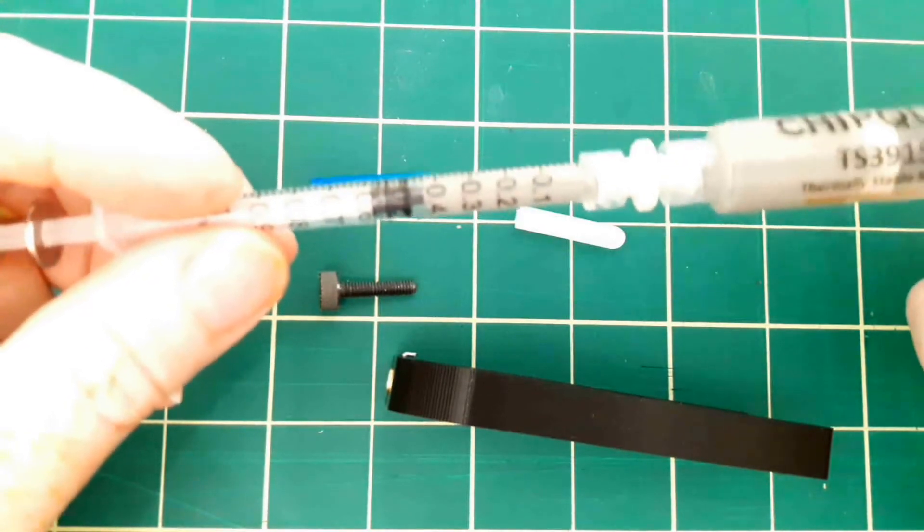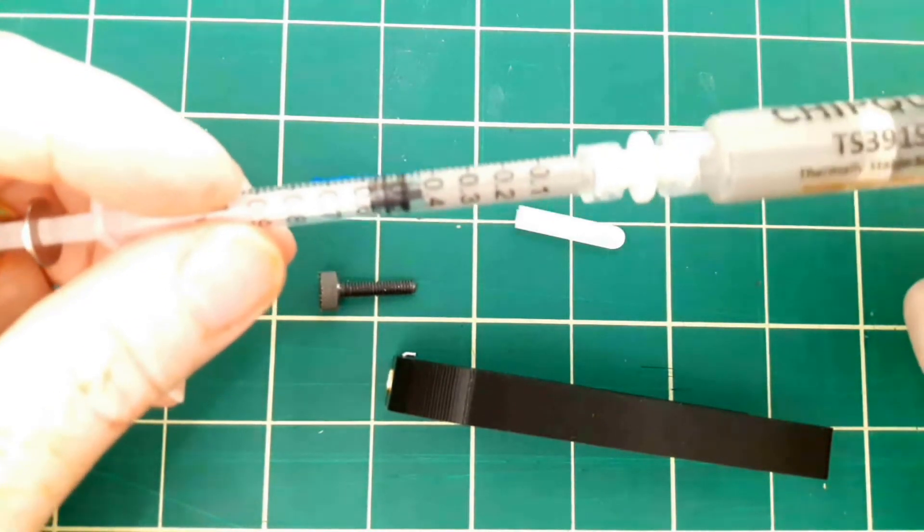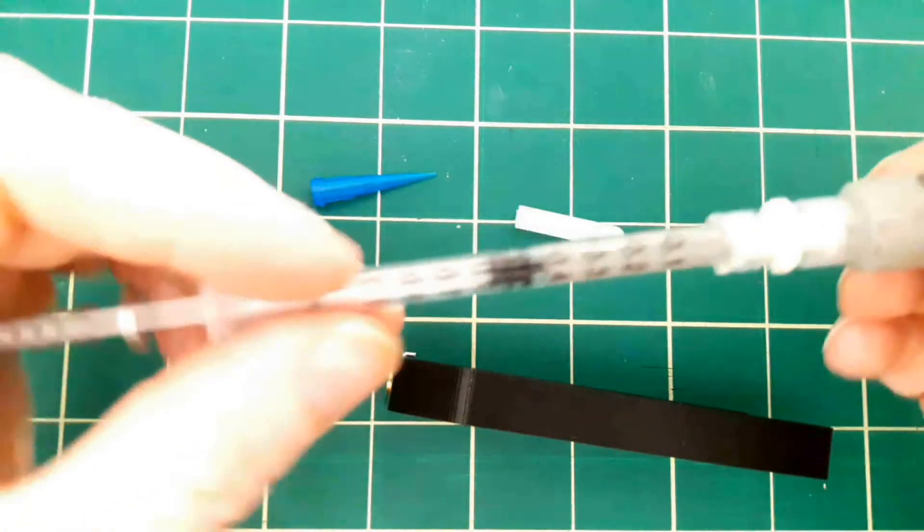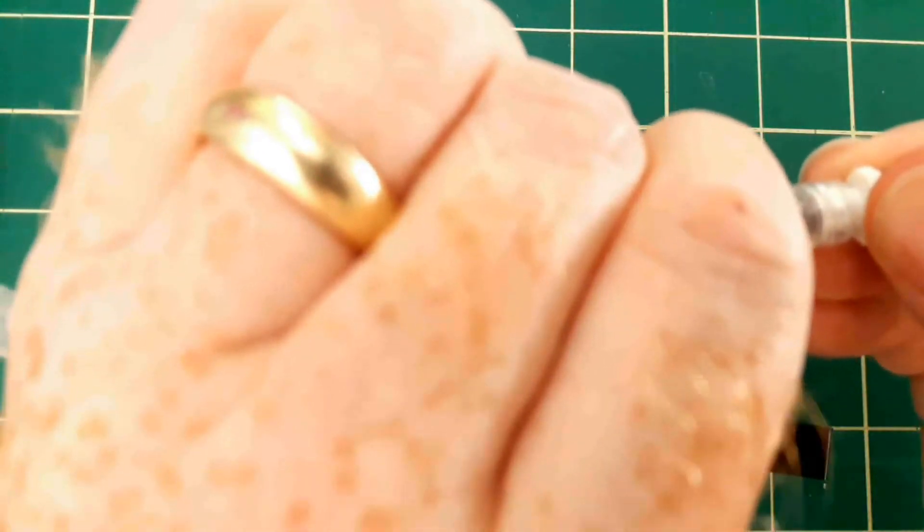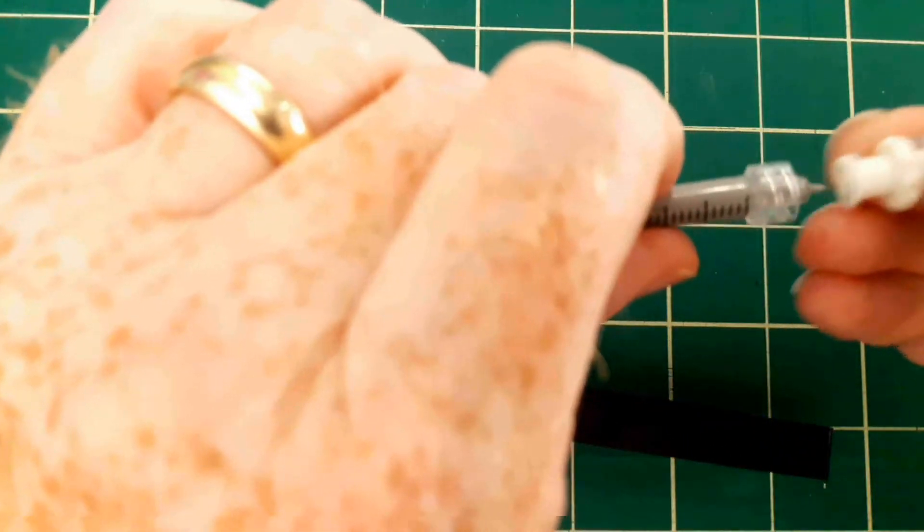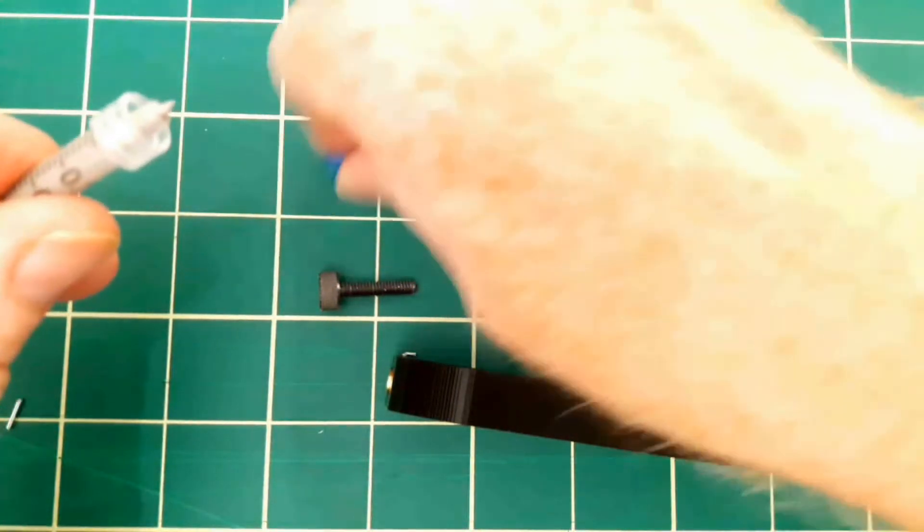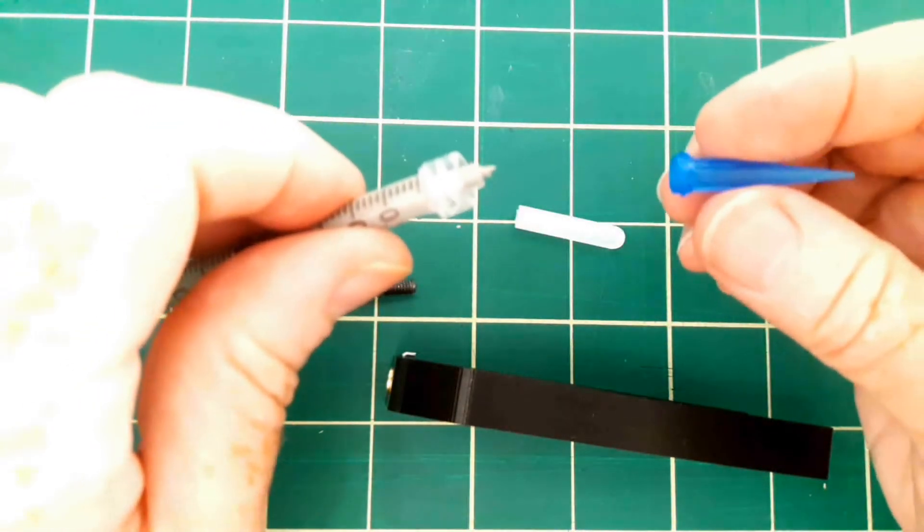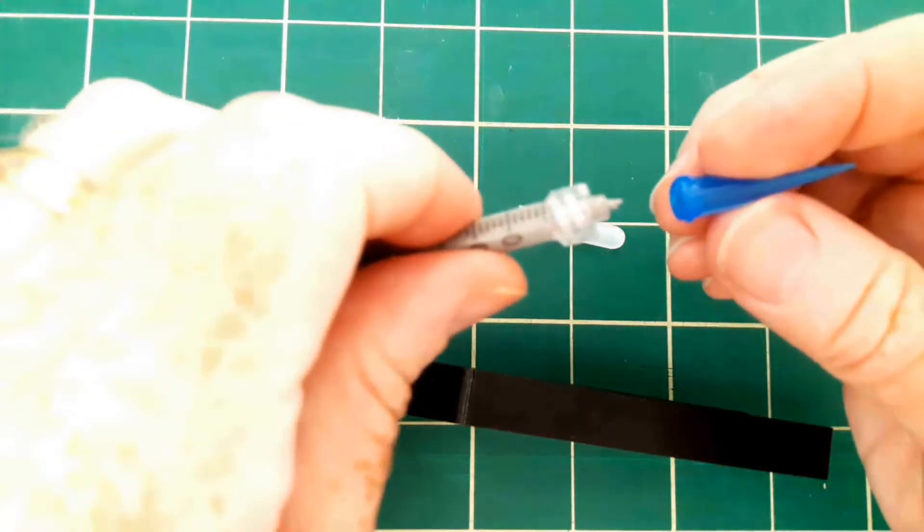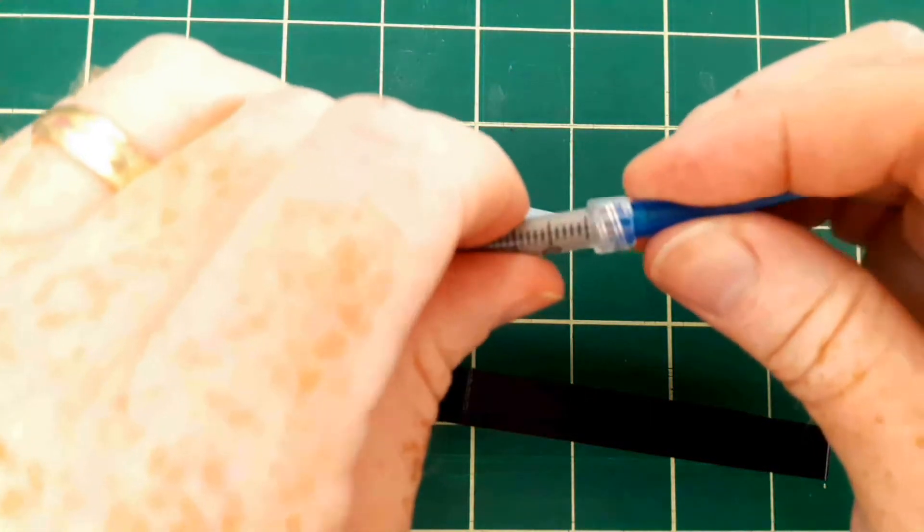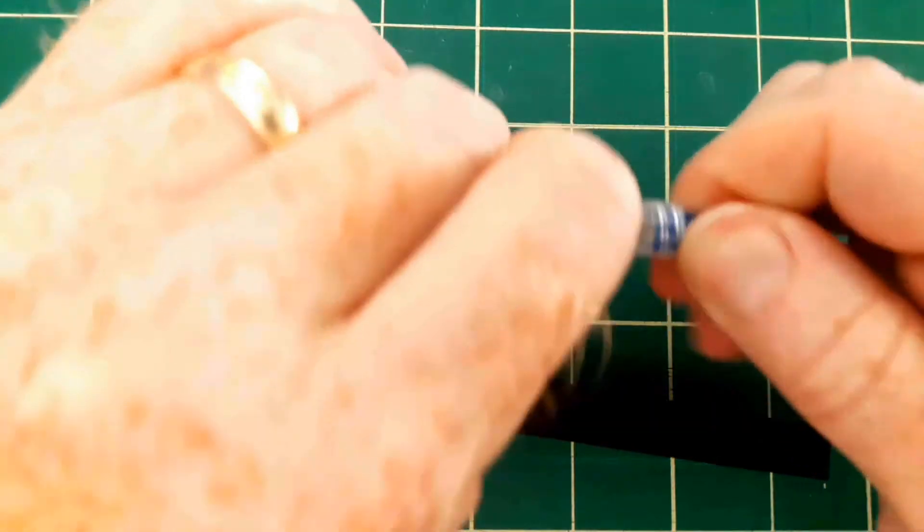So I'm going to back off on this and then take this out. Now we're going to take this which is a number 22 gauge I believe conical dispensing needle like so.